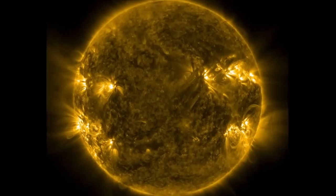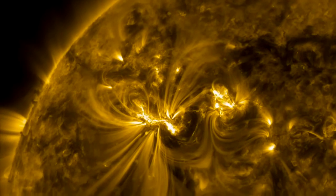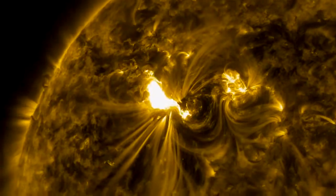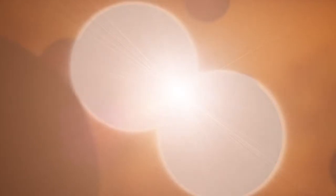The secrets of the Sun are hidden in how energy travels up through its layers out into space. The Sun's energy starts in its core, a giant fusion engine where hydrogen atoms are turned into helium atoms.